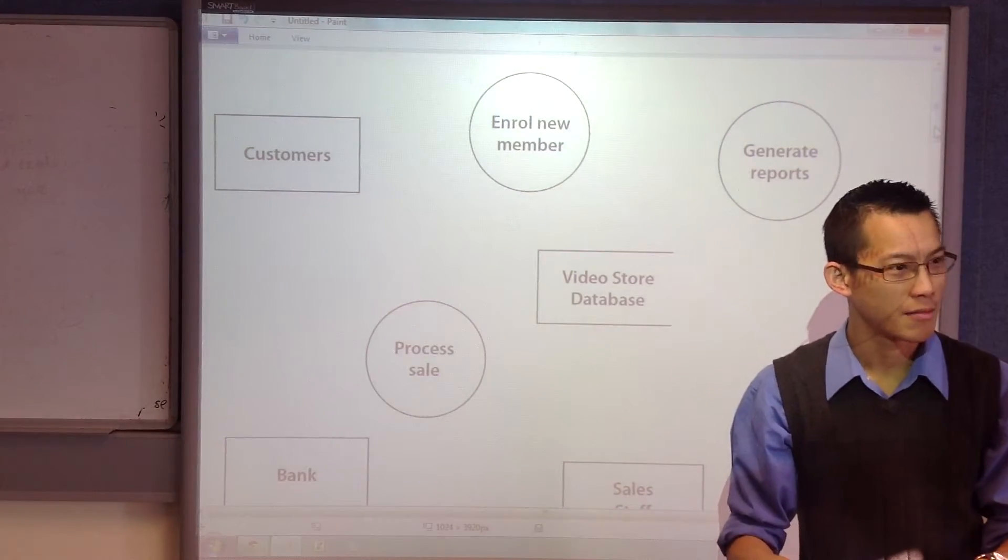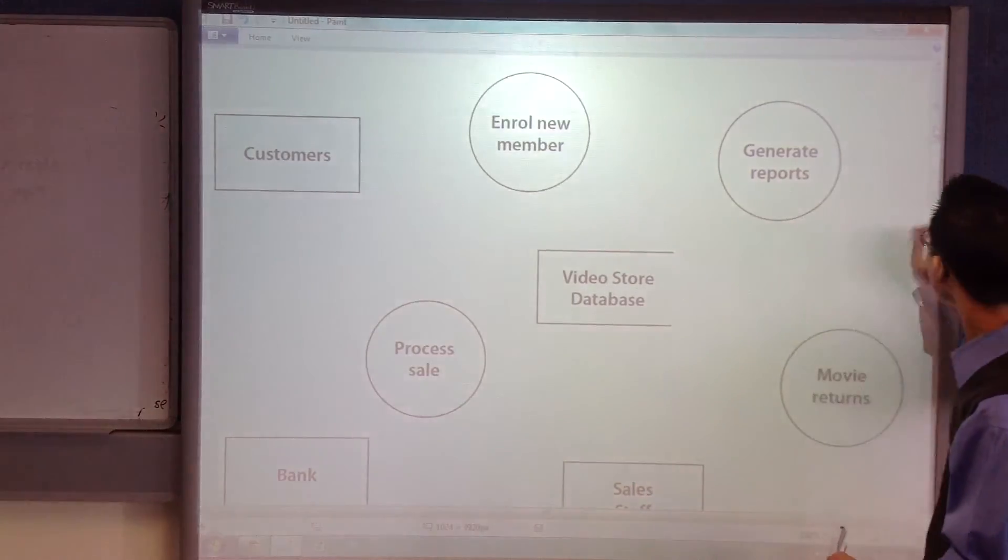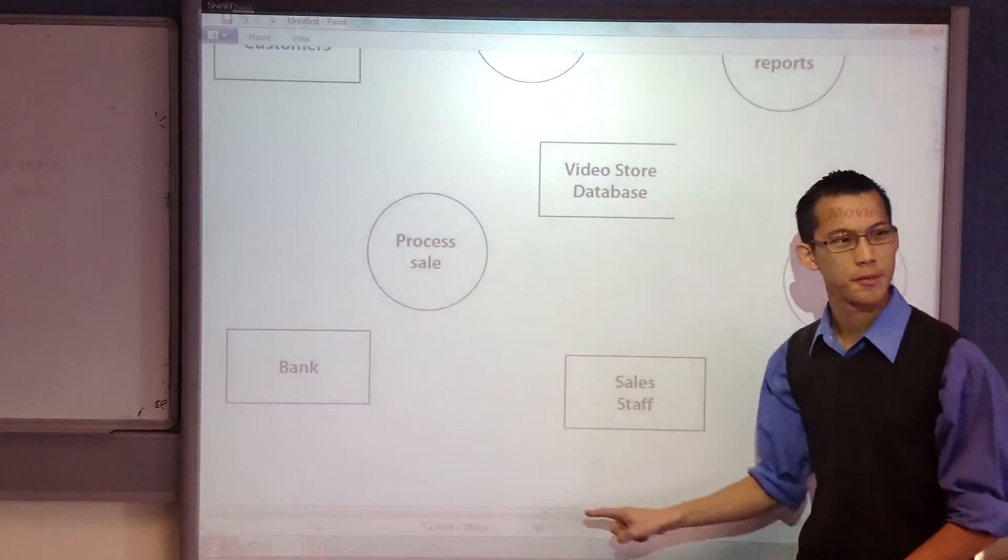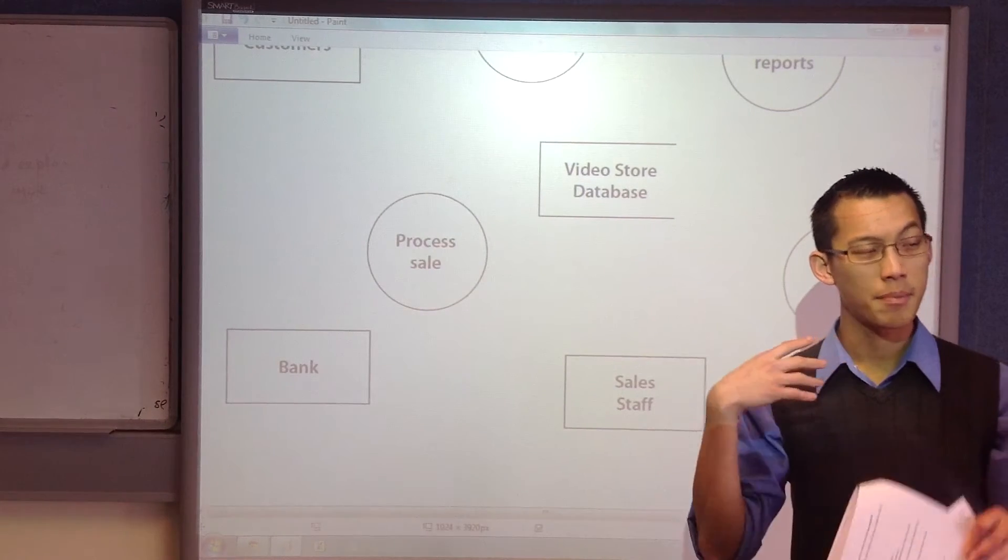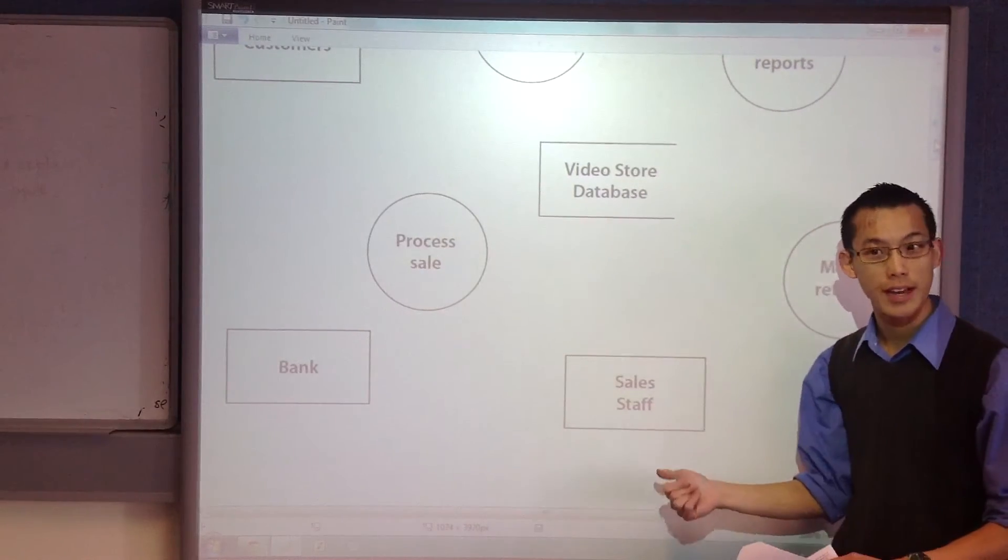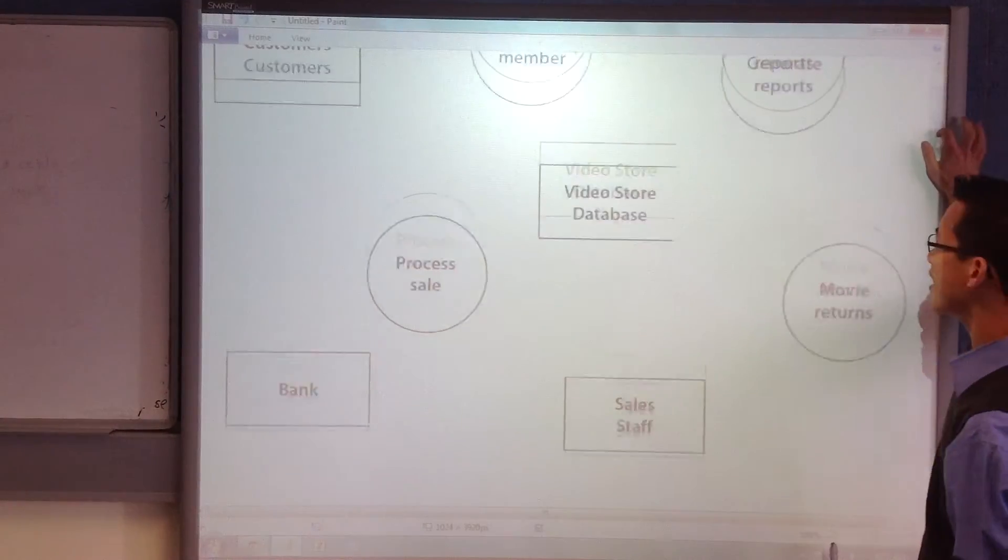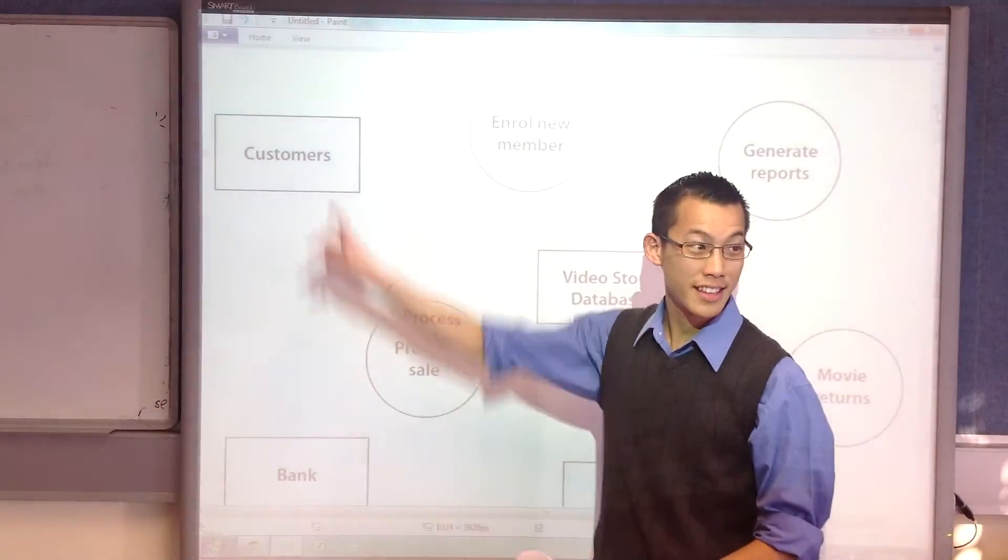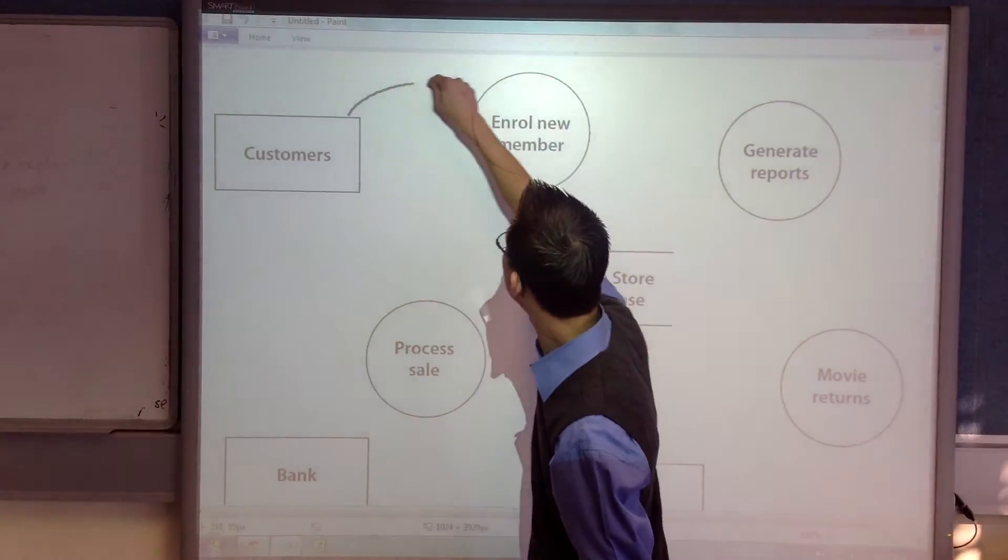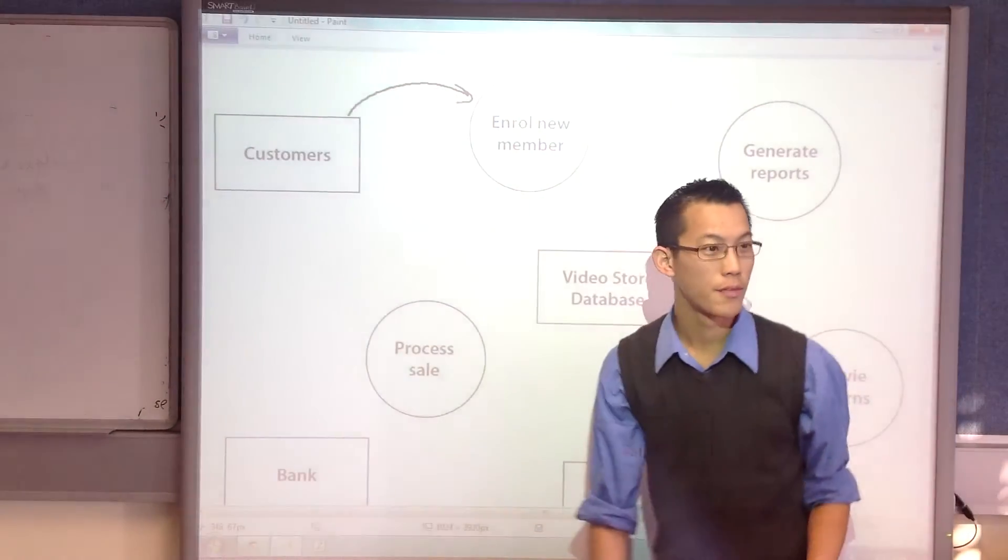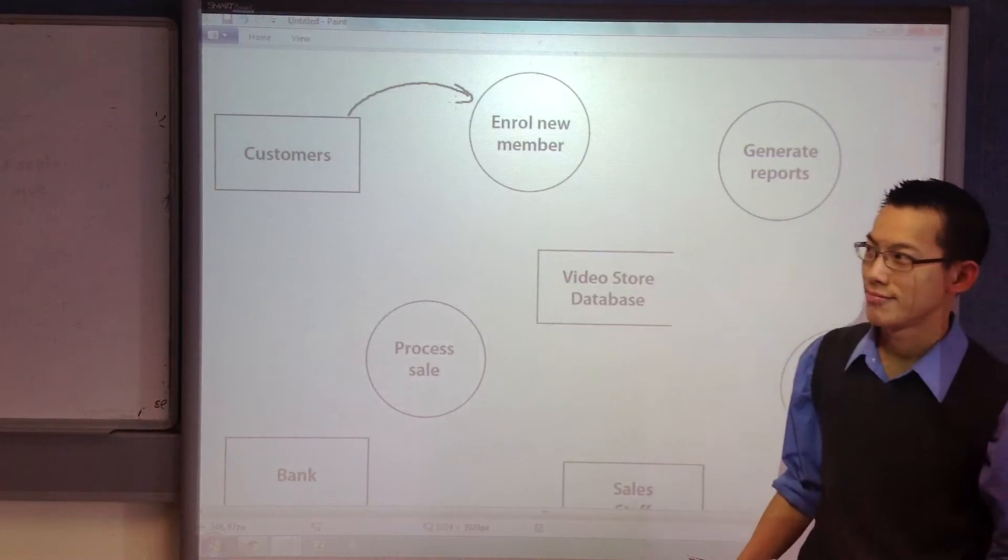Customer details have to get entered in, right? I assume the sales staff wants to type that in. But that kind of tells you something right away. That data actually doesn't come from the sales staff, right? It doesn't originate from them. They might actually be entering it in, they might be the participant at that point, but they're not the source of the data. And that's what data flow diagrams are about. So customer details is right, but they come from, surprise surprise, the customers. So here's my first data flow that I'm going to put in. Customers, they're going to provide information to the enrolling member process.